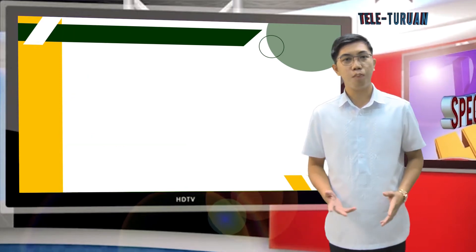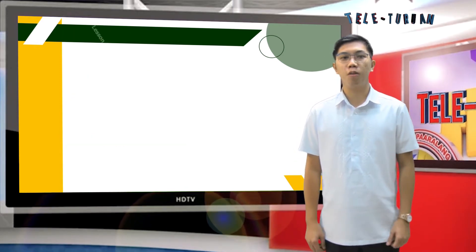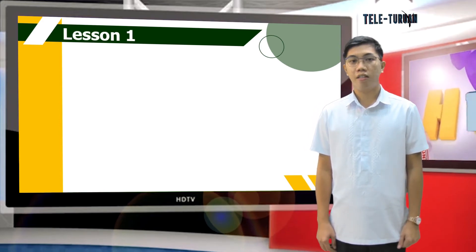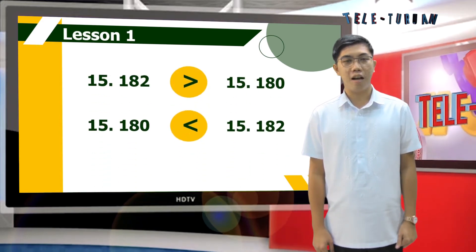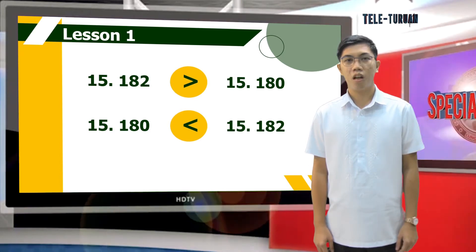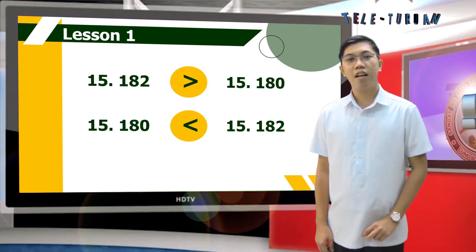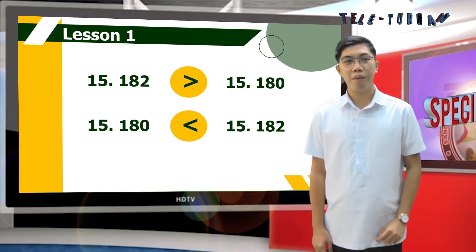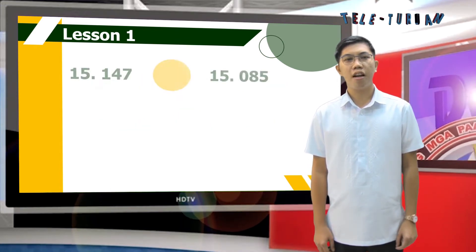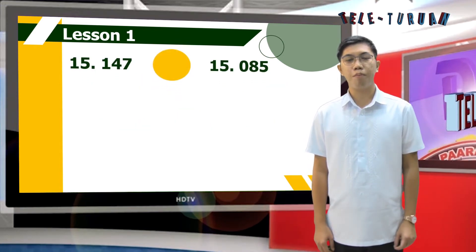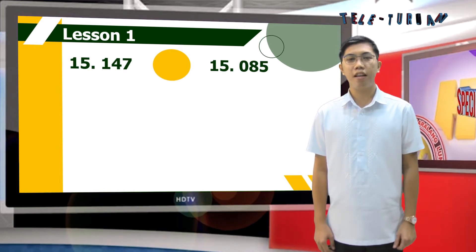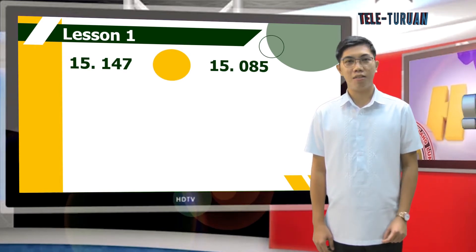At this point, let's continue to learn more about decimal numbers. Take a closer look at these examples — it's about comparing decimals. Let's try to compare fifteen and one hundred forty-seven thousandths and fifteen and eighty-five thousandths.